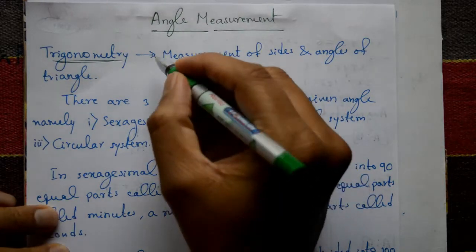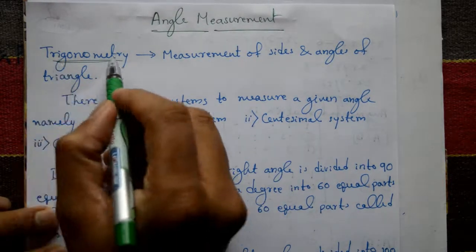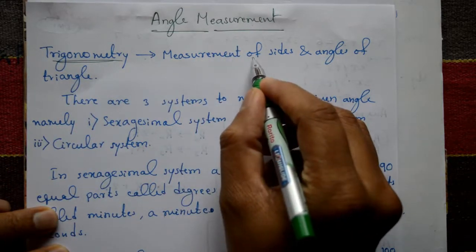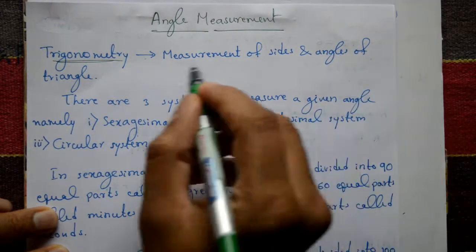Angle measurement. Trigonometry is measurement of sides and angles of triangle.